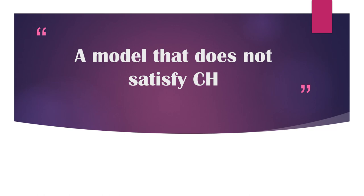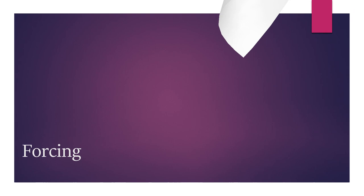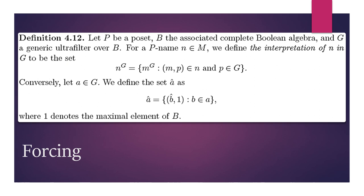Now let's have the model that does not satisfy CH — the forcing construction by Cohen. Definition 4.12: Let P be a poset with associated complete Boolean algebra B, and G a generic ultrafilter over B. For a P-name N ∈ M, we define the interpretation of N in G as N^G = {m^G : (m, p) ∈ N and p ∈ G}. Conversely, let A ∈ M. We define the check name Ǎ as Ǎ = {(b̌, 1) : b ∈ A}, where 1 denotes the maximal element of B.